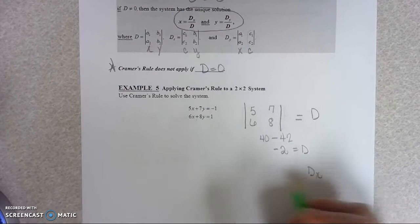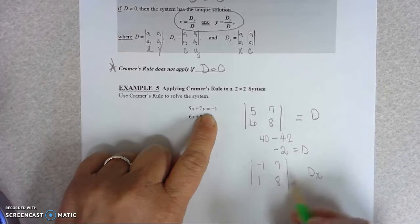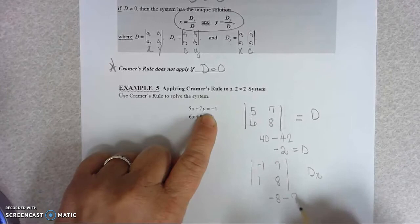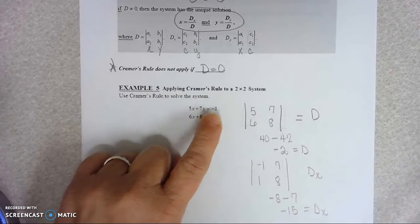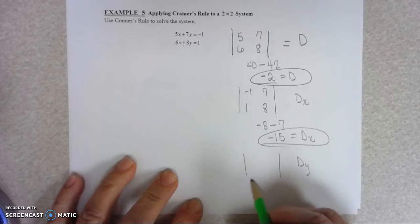We need to find DX. And we would replace your X coefficients with your constants and still use our Ys. So negative 1 times 8 is negative 8 minus 1 times 7 is 7. That would be negative 15 for D sub X. So we've got D, we've got DX.